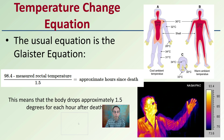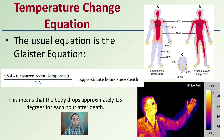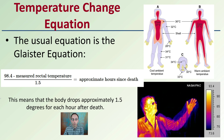The usual temperature change equation is represented here, where we take 98.4 minus the measured rectal temperature, divided by 1.5. This gives the approximate hours since death. This means the body drops approximately one and a half degrees for each hour after death. Keep in mind, this is looking at the core temperature, and the measurements are taken in Fahrenheit, where 98.4 is the average starting temperature of the human body.